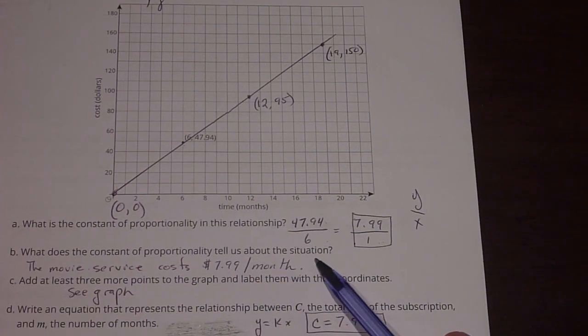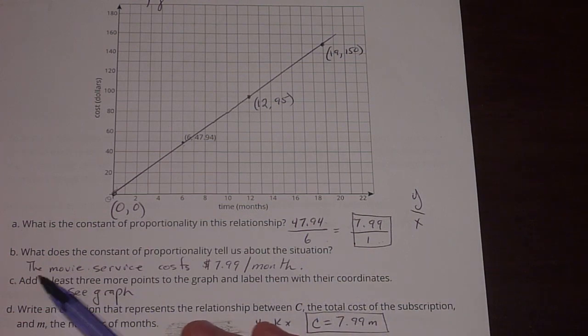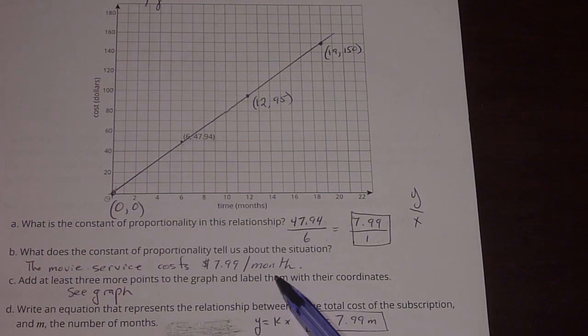Part B says, what does the constant of proportionality tell us about the situation? Well, we know that the movie service is going to cost $7.99 for every month.